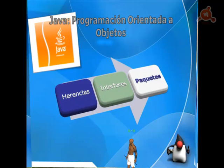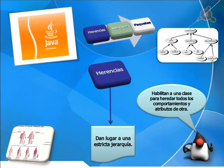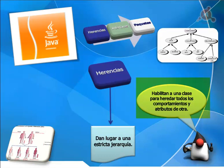Vamos allá con las herencias. La herencia es uno de los conceptos cruciales en la programación orientada a objetos. Se trata de un mecanismo que habilita a una clase para heredar todos los comportamientos y los atributos de otra clase. Así que creamos una clase que hereda de otra y ya tiene por tanto creados todos los métodos y todos los atributos de esa clase, y lo único que vamos a tener que hacer es definir las diferencias de esta nueva clase respecto a aquella de la que ha heredado.